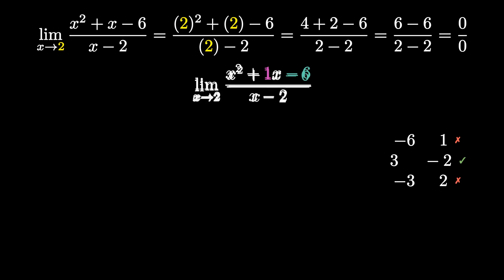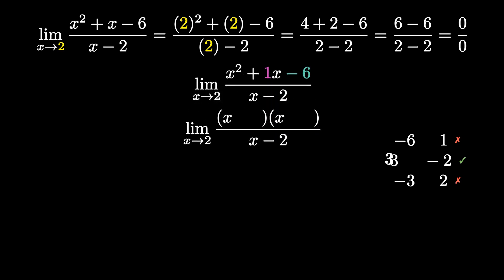When we factor, x squared plus x minus 6 becomes x plus 3 times x minus 2. Our denominator, x minus 2, is already fully factored. Notice that our numerator has x minus 2 and our denominator also has x minus 2.